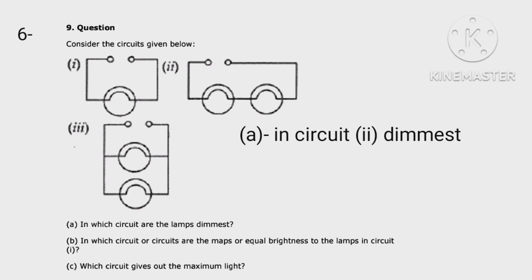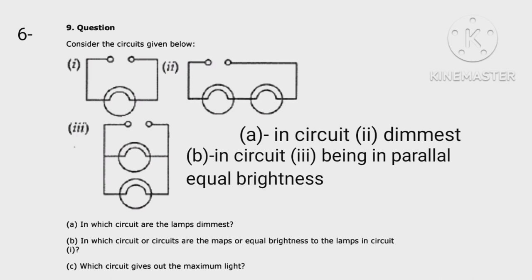In circuit A, the lamps are dimmest as it is connected in series arrangement. In circuit B, the lamps are equal brightness as both are connected in parallel.